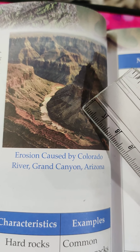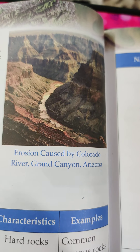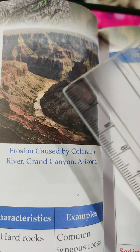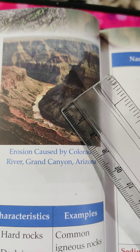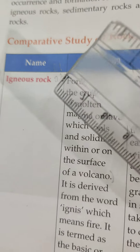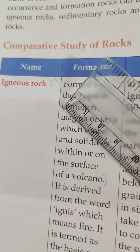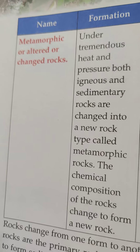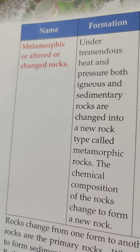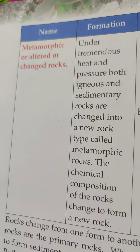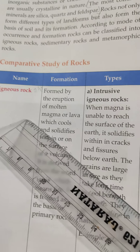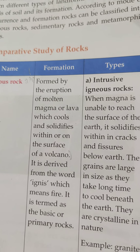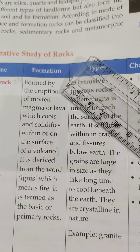Rocks not only form different types of landforms, they are also responsible for soil formation on the earth. Rocks are classified into three types: igneous rocks, sedimentary rocks, and metamorphic rocks.